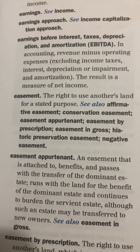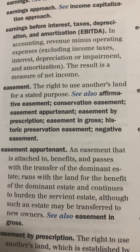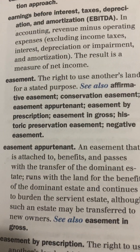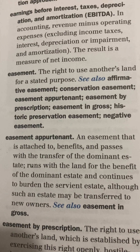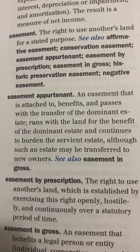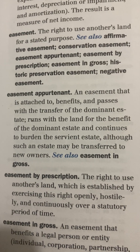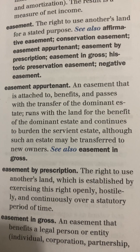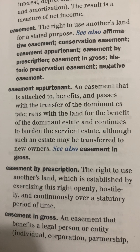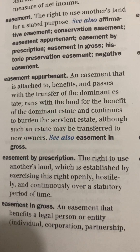Easement: the right to use another's land for a stated purpose. See also Affirmative Easement, Conservation Easement, Easement Appurtenant, Easement by Prescription, Easement in Gross, Historic Preservation Easement, Negative Easement. Easement Appurtenant: an easement that is attached to, benefits, and passes with the transfer of the dominant estate. It runs with the land for the benefit of the dominant estate and continues to burden the servient estate, although such an estate may be transferred to new owners. See also Easement in Gross.